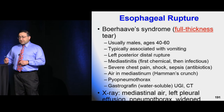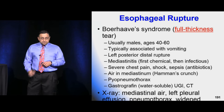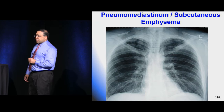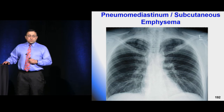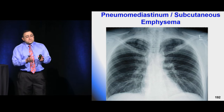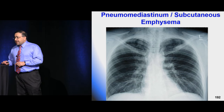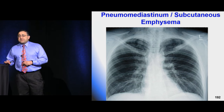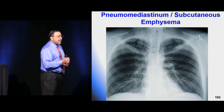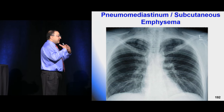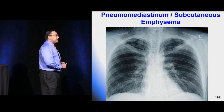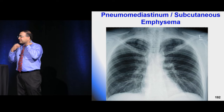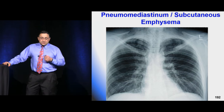Boerhaave's is the retching/vomiting patient, usually against a closed glottis — classic story is an alcoholic. This full-thickness tear leads to mediastinitis if not caught. On X-ray you'll see mediastinal air and subcutaneous emphysema in the soft tissue of the neck. Don't just look at bones and lungs — look at the soft tissue. You'll get that rice-crispy feeling — Hamman's crunch — and that's your classic Boerhaave's presentation.